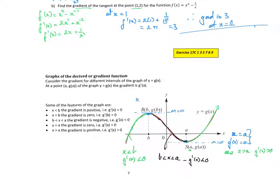So at x equal to b, g'(b) is equal to 0. We're concentrating on the slope of the line, not the position where we are. For example, from that point there the graph is going down and the y value is negative, but I'm concentrating on the gradient of the line. So that's really important.